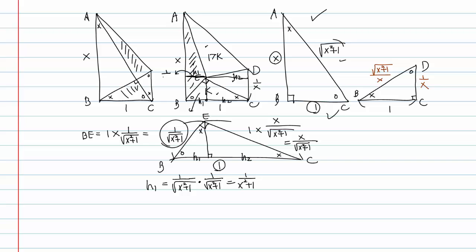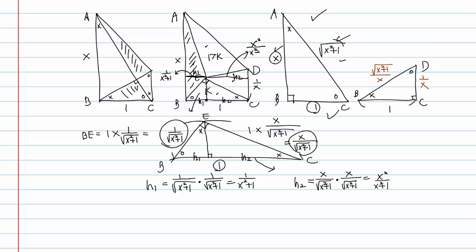So h1 equals 1 over X squared plus 1. For h2: h2 equals X over X squared plus 1 times X over X squared plus 1, giving h2 equals X squared over X squared plus 1.